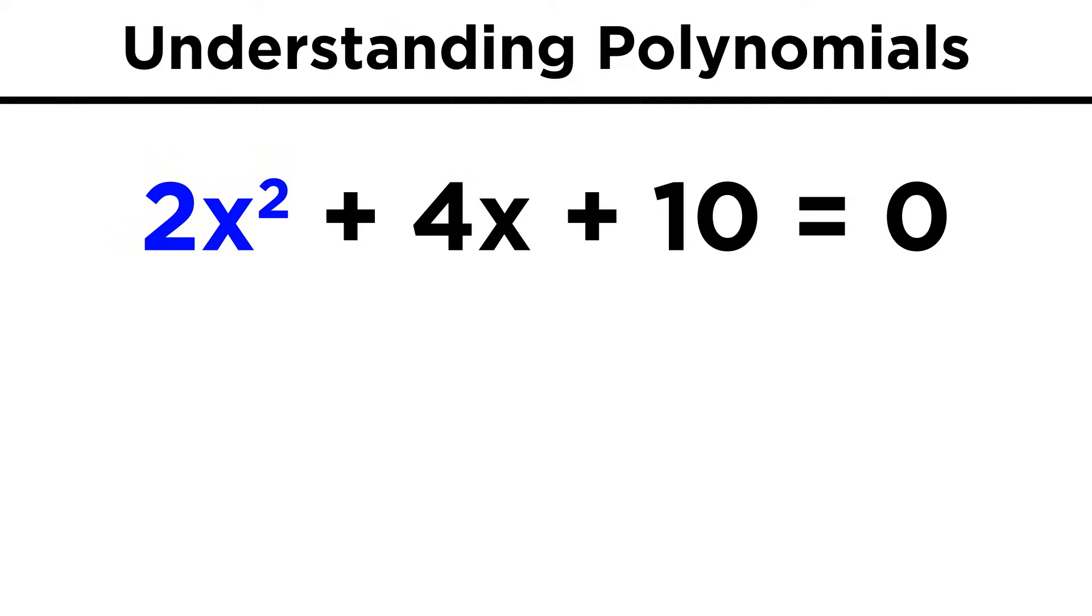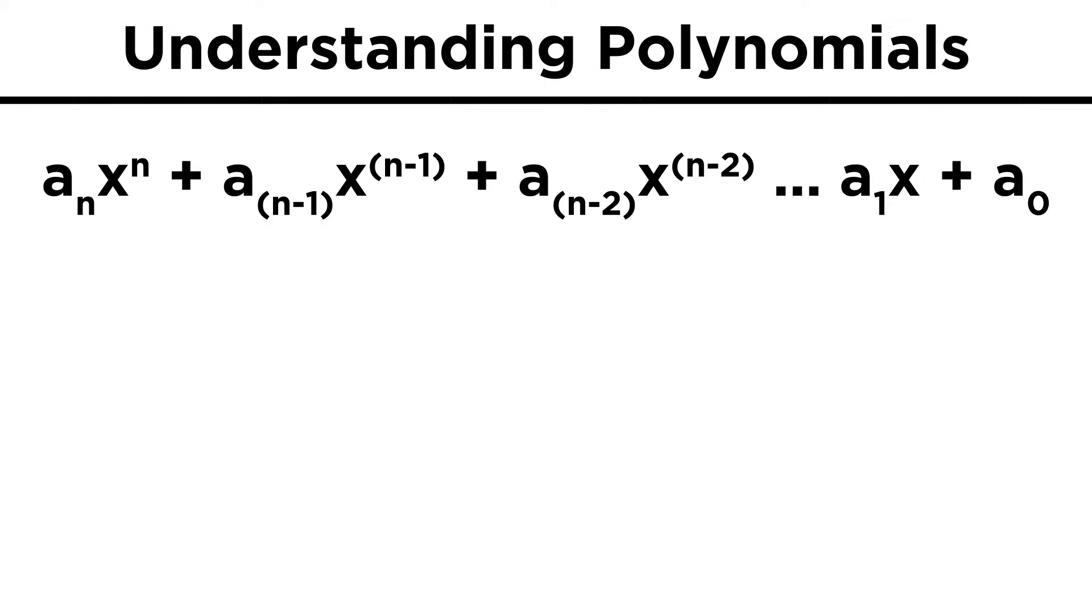We can see that there is an x squared term, an x term, and a number or constant, and that's what makes this a polynomial, because it follows the general form of a sub n x to the n plus a sub n minus one x to the n minus one plus a sub n minus two x to the n minus two, and so on until we get to a one x plus a zero, a constant.